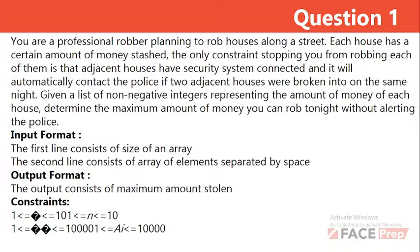Given a list of non-negative integers representing the amount of money in each house, we need to determine the maximum amount of money you can rob tonight without alerting the police. So we have n houses, each with a value, and the constraint is that no two adjacent houses can be robbed on the same night — meaning we must go with alternate houses.